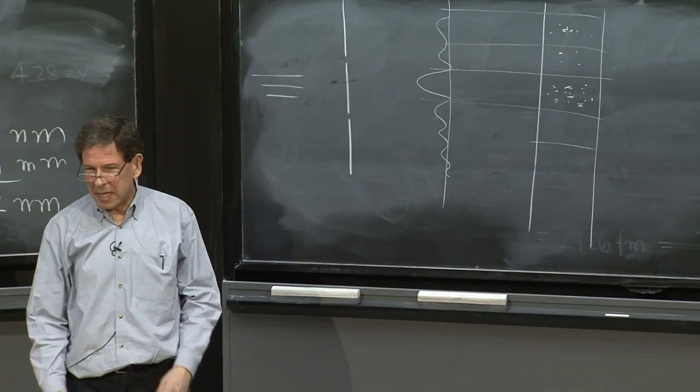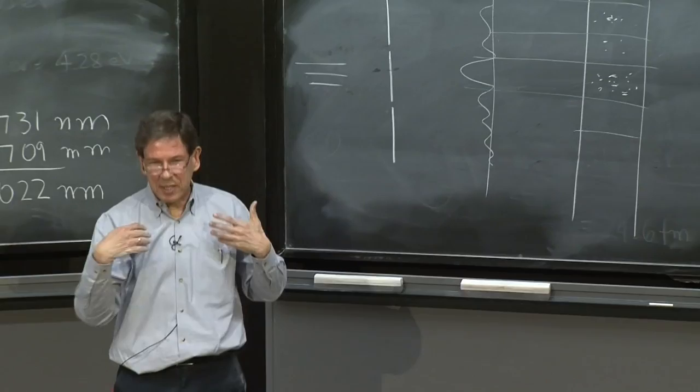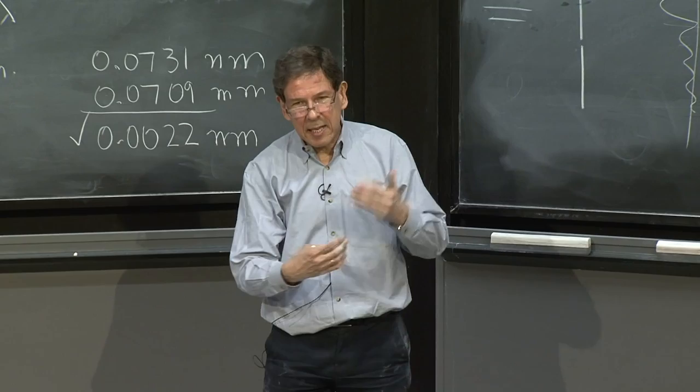So particles, big particles, interfere. Not just photons interfere. So those particles have some waves, some matter waves discovered by de Broglie. And next lecture, we're going to track the story from de Broglie to the Schrodinger equation, where the nature of the wave suddenly becomes clear.